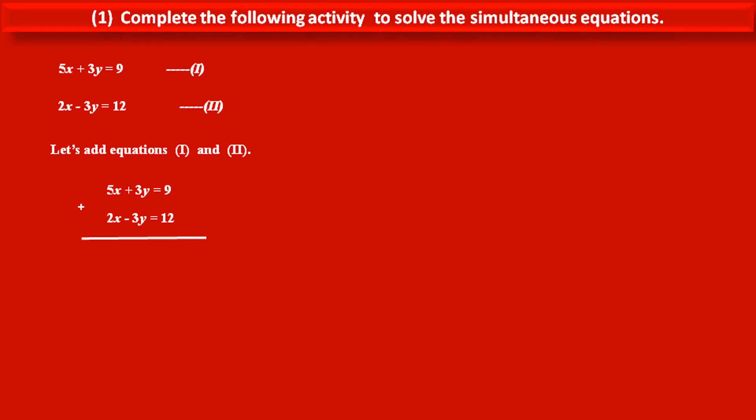we get 5x plus 2x, that is 7x. Terms of y cancel each other. Is equal to, in the right hand side, 9 plus 12, that is 21.